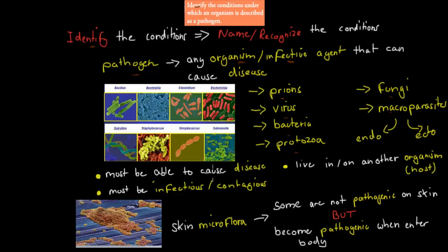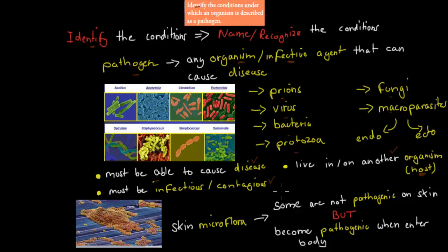These are the actual conditions for being a pathogen. They must be able to cause disease — that's really important; if they don't cause disease, they're not a pathogen. They must live in or on another organism, often called a host. And they must be infectious or contagious — basically they need to be able to go from one person to another through either air, saliva, or vector.